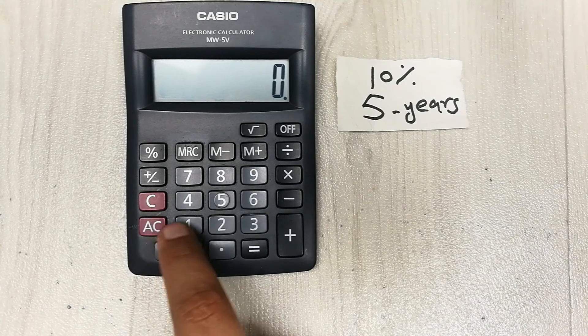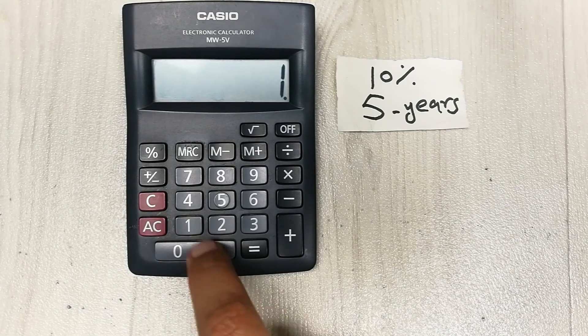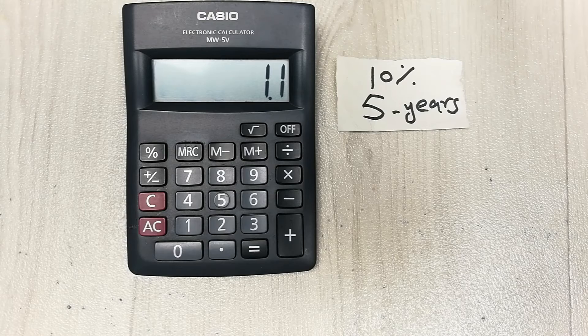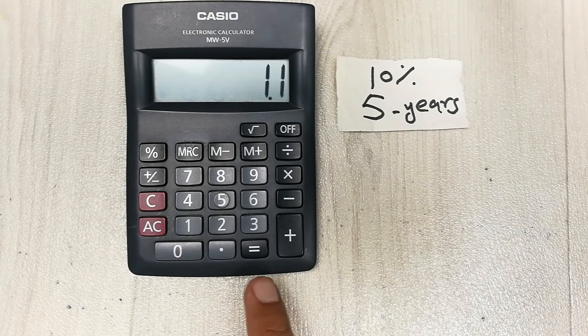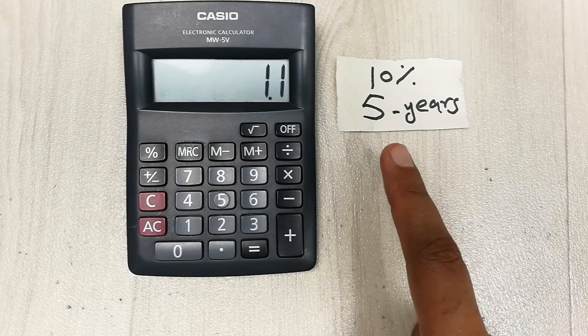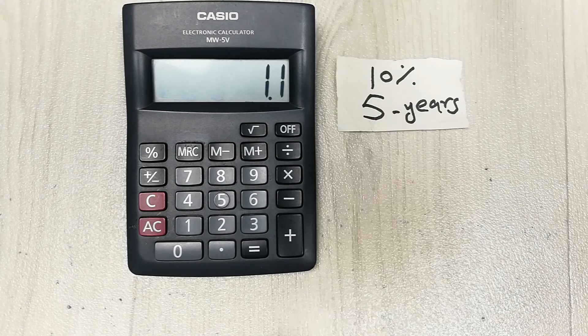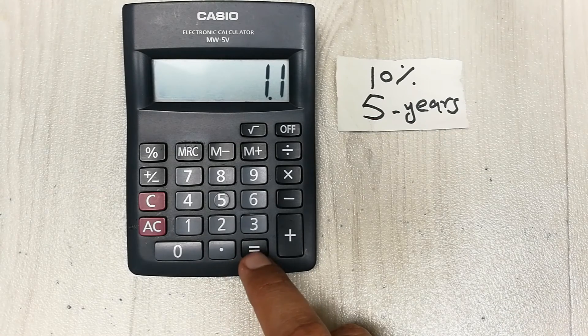In the fourth step, we press this equal button according to our period. Here we have five years, so we press the equal button five times.